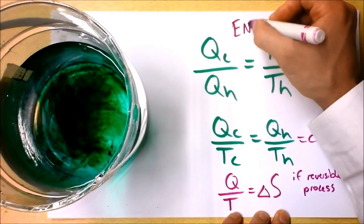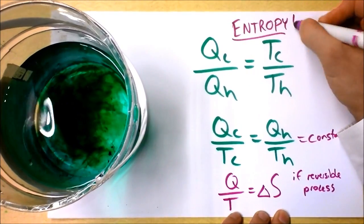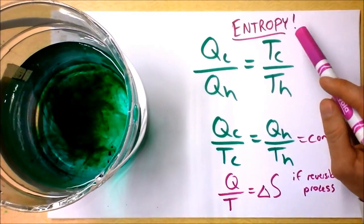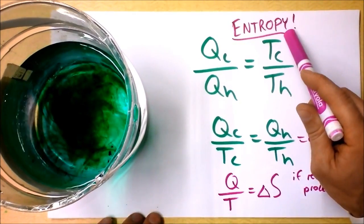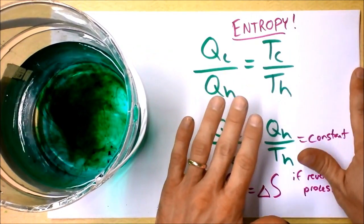So entropy... entropy is, well, I think the easiest word to associate with entropy is disorder. So if something is disorganized, it has a lot of entropy.